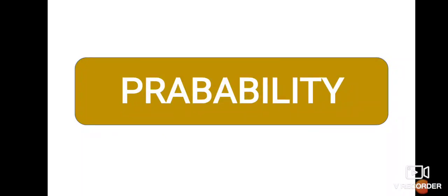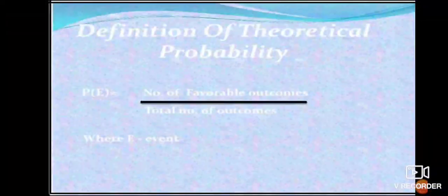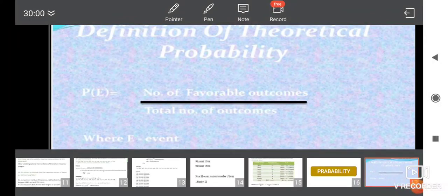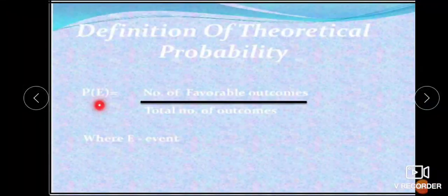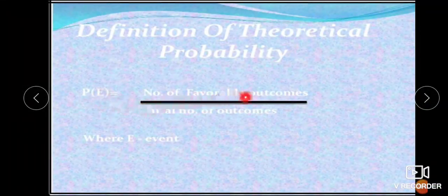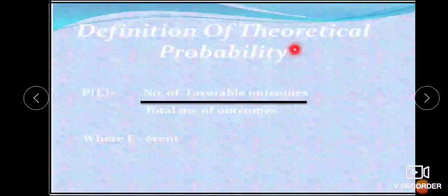You already know the formula for finding the probability of an event. The formula is P(E) equals the number of favorable outcomes divided by the total number of outcomes, where E is an event. This is a very important formula for the examination. This is the formula for finding theoretical probability.